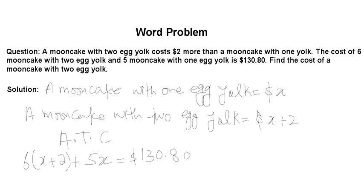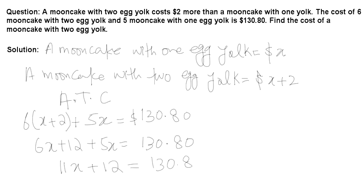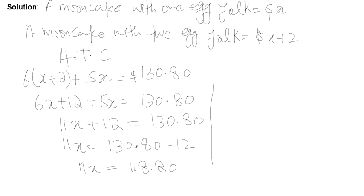This is a simple linear equation and we just have to solve it to get the value of x. Expanding: six x plus twelve plus five x equals 130.80. Adding like terms: eleven x plus twelve equals 130.80. So eleven x equals 130.80 minus 12, which gives eleven x equals 118.80.